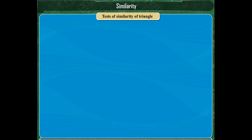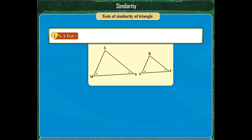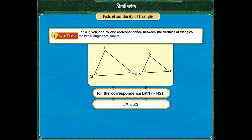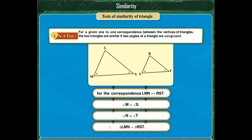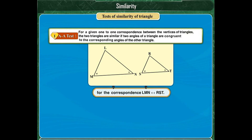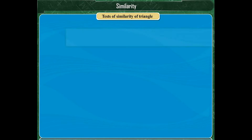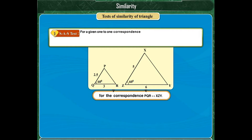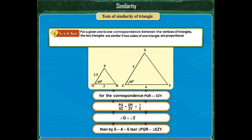Once again, we will recall the tests of similarity of two triangles. The first test is AA test. It states that for a given one-to-one correspondence between the vertices of triangles, the two triangles are similar if two angles of a triangle are congruent to the two corresponding angles of the other triangle.